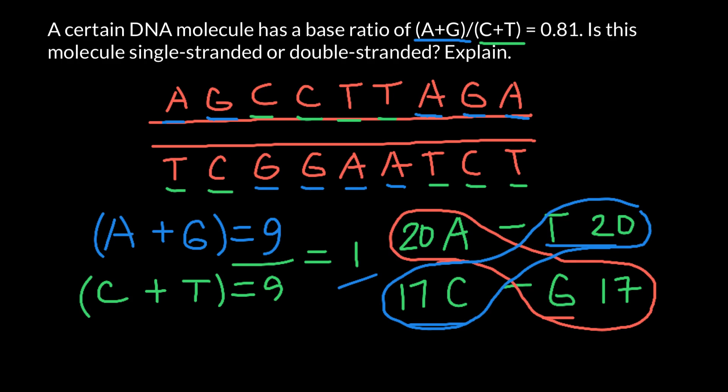So in double-stranded DNA, the ratio of these bases always should equal 1. Because in our problem the ratio is different, it is 0.81, we can tell that this is single-stranded DNA. Because in double-stranded DNA, we always going to get 1 here.